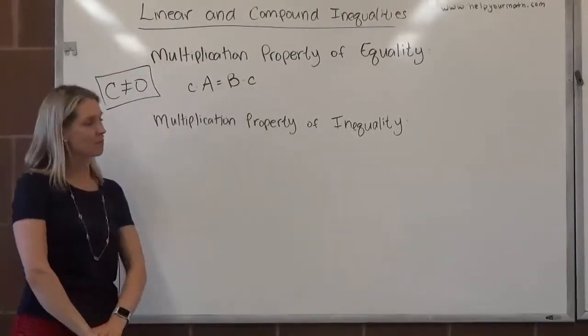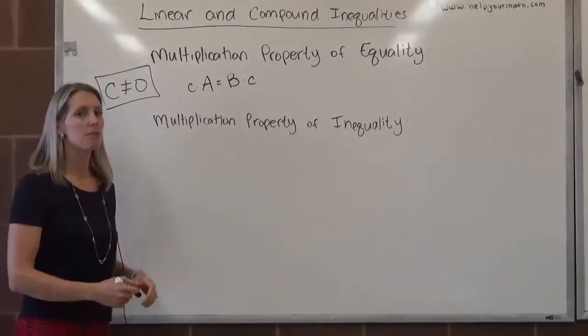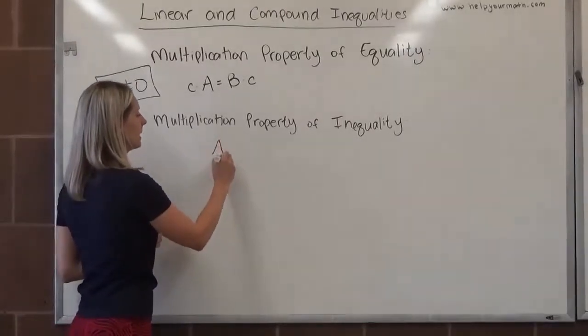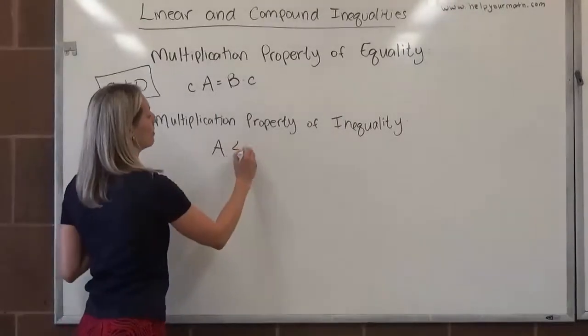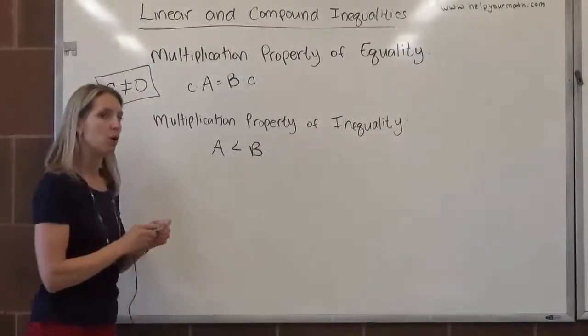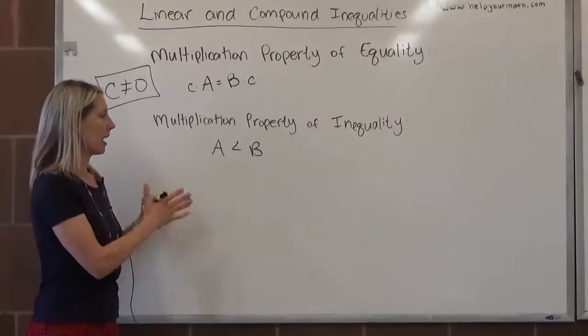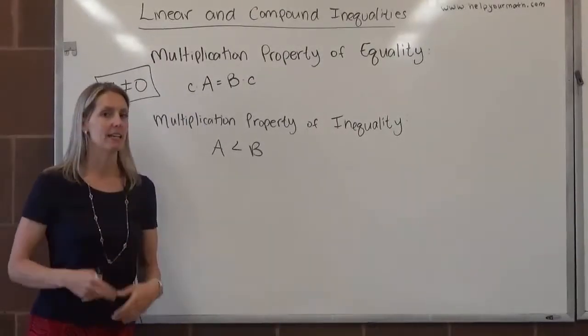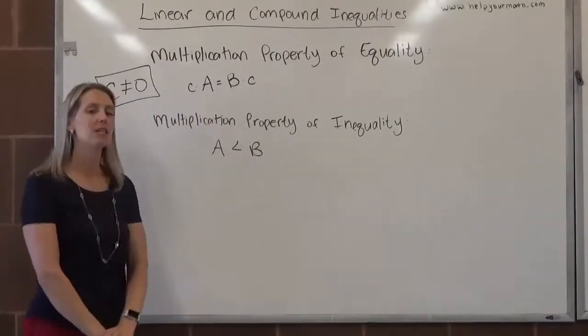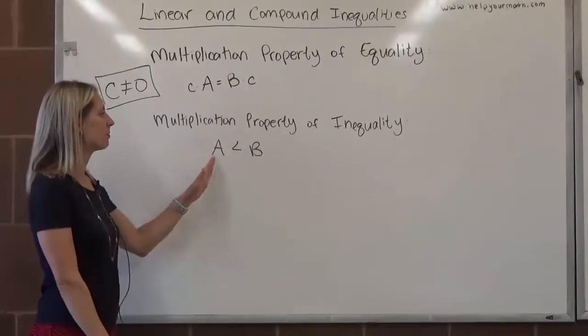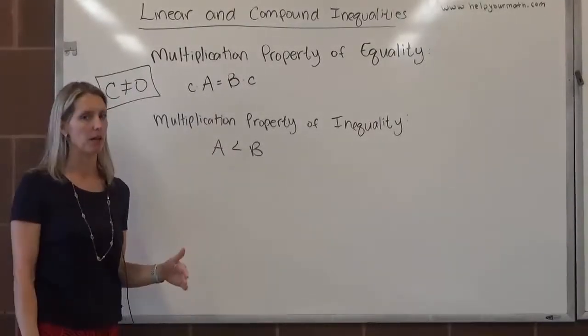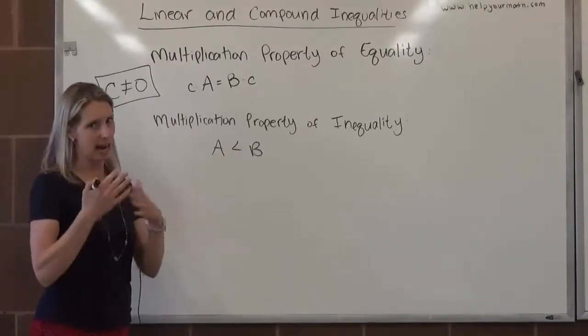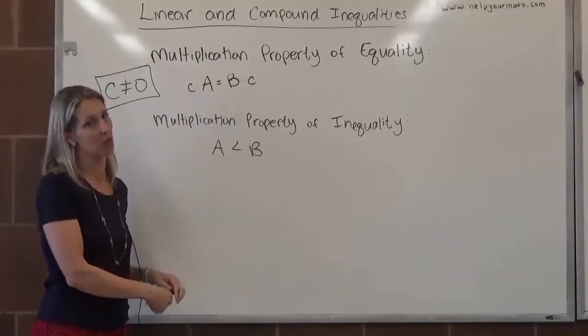Now, the multiplication property of inequality. So if we have an inequality such as A is less than B, we might not know anything about A or B themselves, but we do know that A is less than B. So does this property still hold all the time? If I multiply both sides by the same value, will it maintain that inequality? And I think the best way to investigate is to actually apply this to actual numbers.